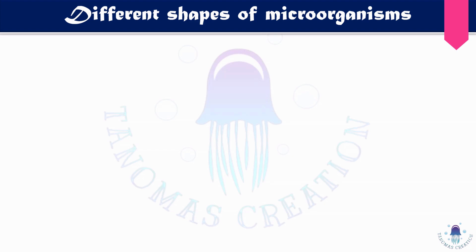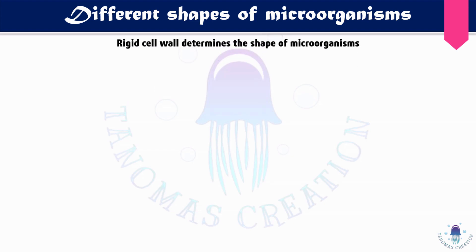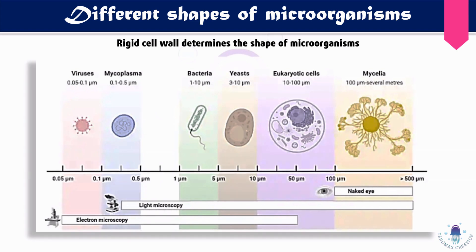Different types of microorganisms have different shapes, which we will see in this scale graph showing the different sizes of the microorganisms. These shapes of the microorganisms are actually defined by the cell wall — it is the cell wall that determines the shape of the microorganism.